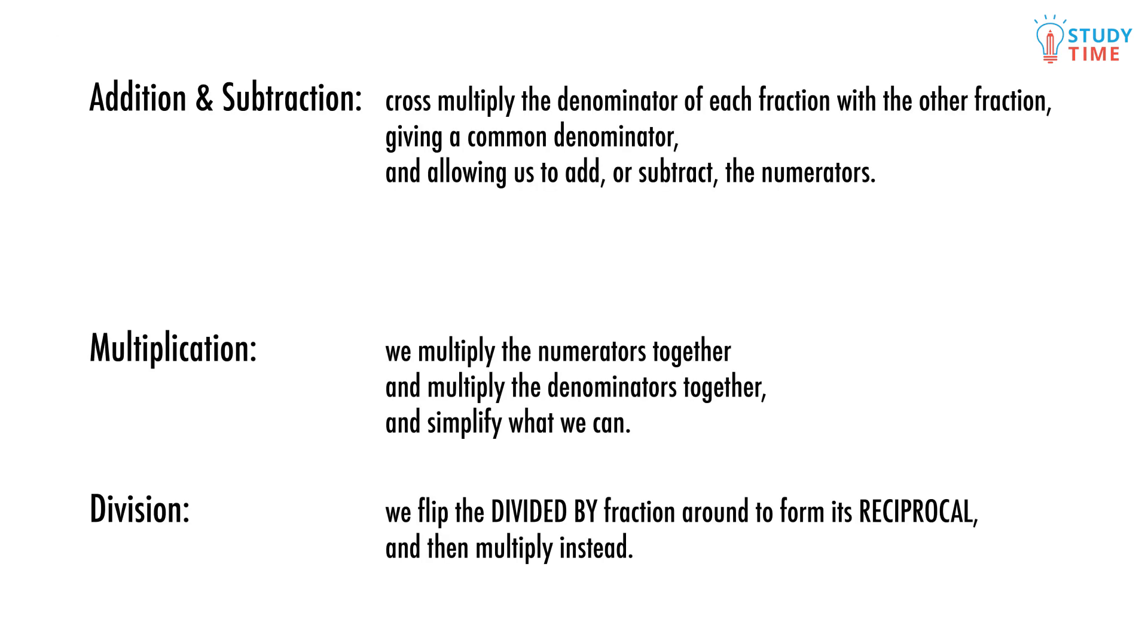So with addition and subtraction, we cross-multiply the denominator of each fraction with the other fraction, giving a common denominator and allowing us to add or subtract the numerators. With multiplication, we multiply the tops and multiply the bottoms and simplify what we can. With division, we flip the divided-by fraction around to form its reciprocal, and then multiply instead. Easy.